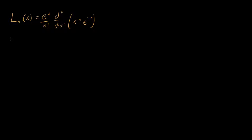The first and easiest example is n equal to 0. In that case we have x to the 0, the 0th derivative divided by 0 factorial. So we just have e to the x times e to the minus x, and that's going to be equal to 1.